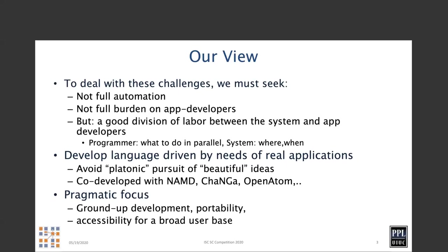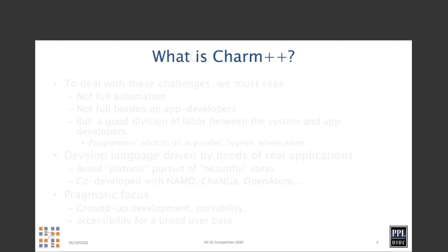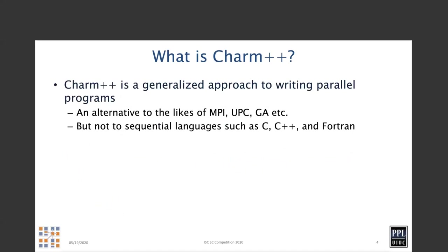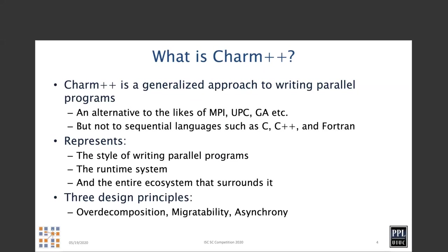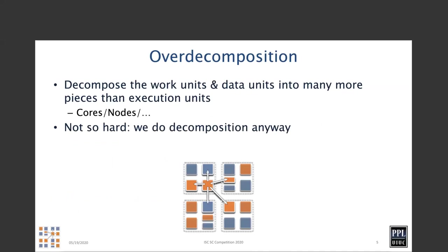The third thing is a very pragmatic focus: increase the level of abstraction as we increase the capability of our system. Charm++ is a general approach to writing parallel programs. It's not a language alternative to C or C++, but an alternative to a programming model such as MPI. It represents a style of writing parallel programs along with its runtime system and the ecosystem of performance analysis tools that surrounds it. It is based on three fundamental ideas: over-decomposition, migratability, and asynchrony.